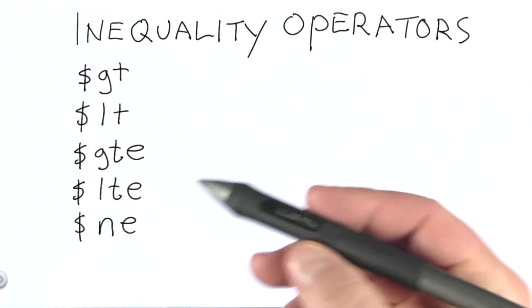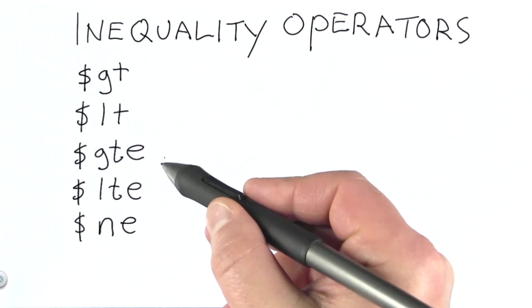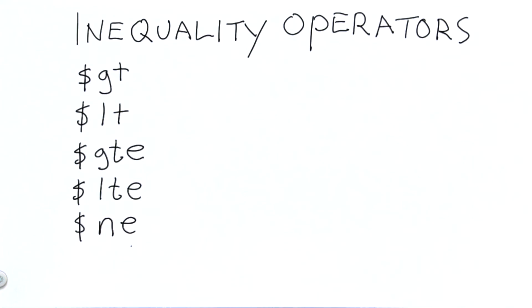The inequality operators we may use include greater than, less than, greater than or equal to, less than or equal to, or not equal to. There are also a couple that are designed for querying array fields. We'll talk about those in a later lesson.